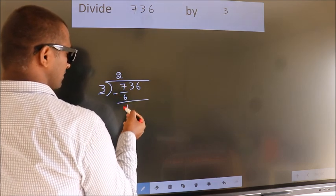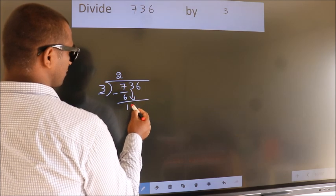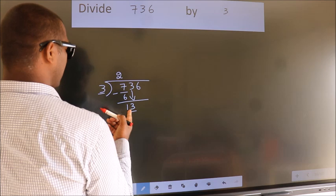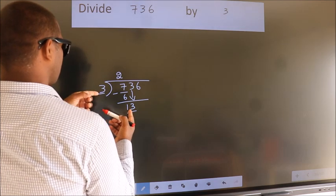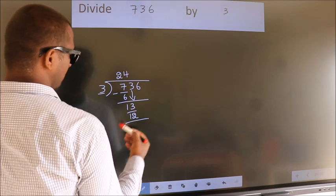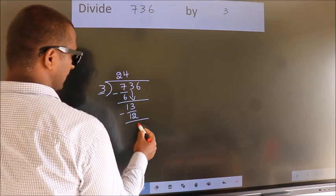After this bring down the beside number. So 3 down, so 13. A number close to 13 in 3 table is 3 4's 12. Now we subtract. We get 1.